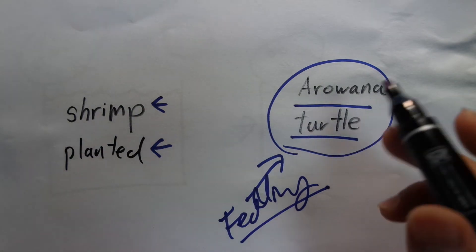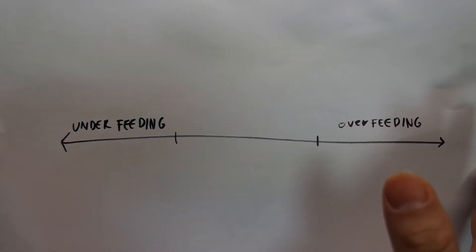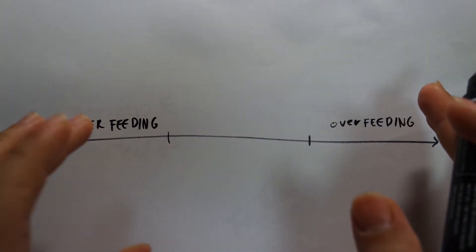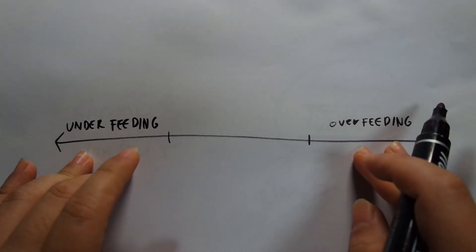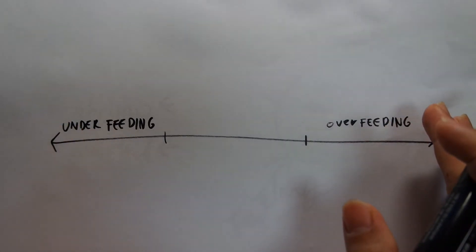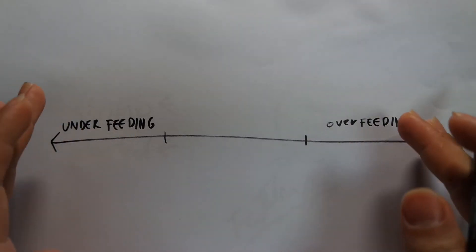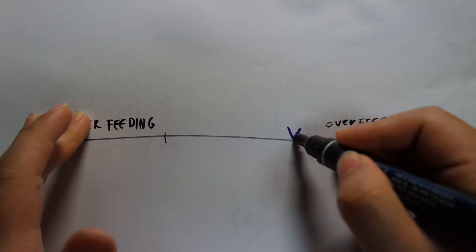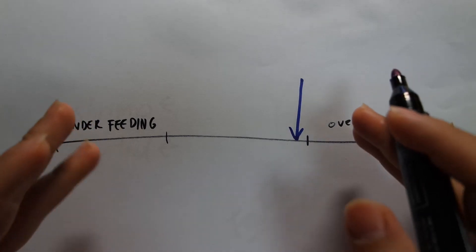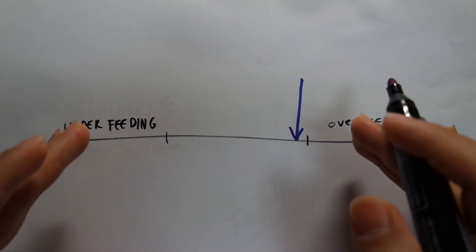So basically what we should be thinking about more when we're trying to achieve a no water change tank is optimizing the feeding. You don't want to feed too little and you don't want to feed too much. Everybody understands that. But a lot of hobbyists, the enjoyment of the hobby is feeding your fish. That's part of the hobby. So people are over here in terms of their feed. They are towards the upper spectrum of the middle range where it is optimal.